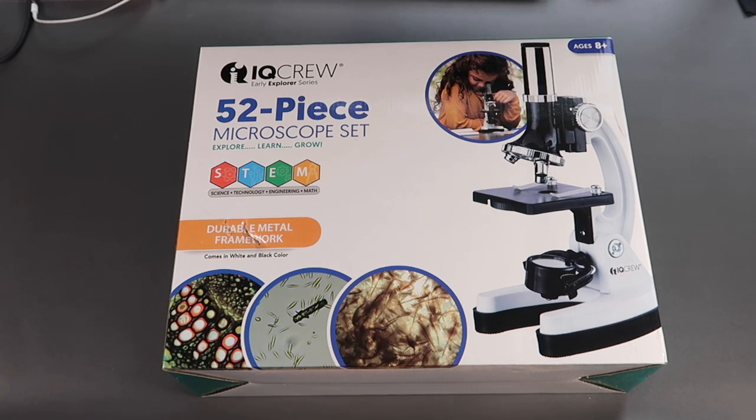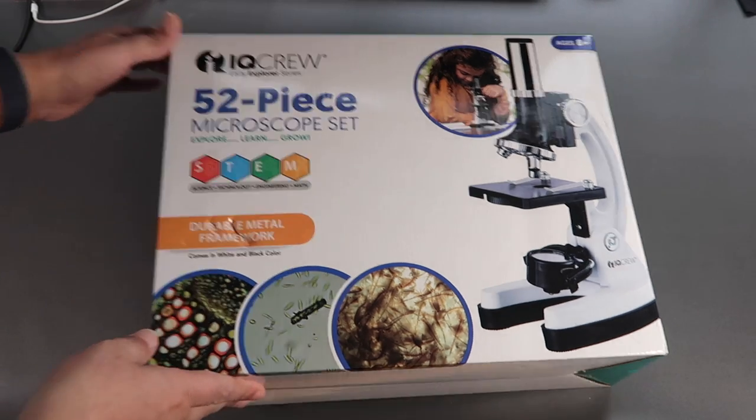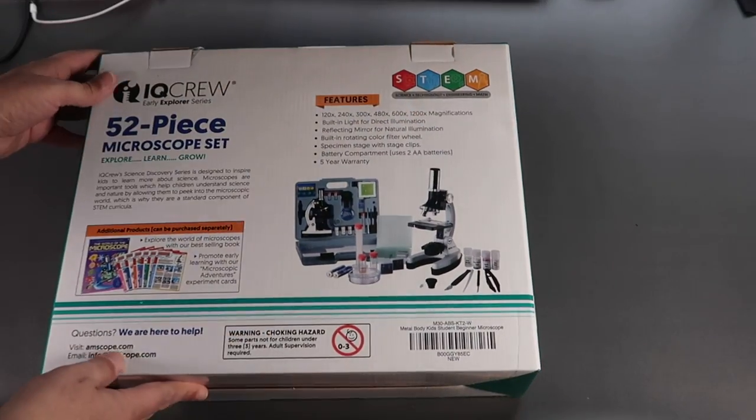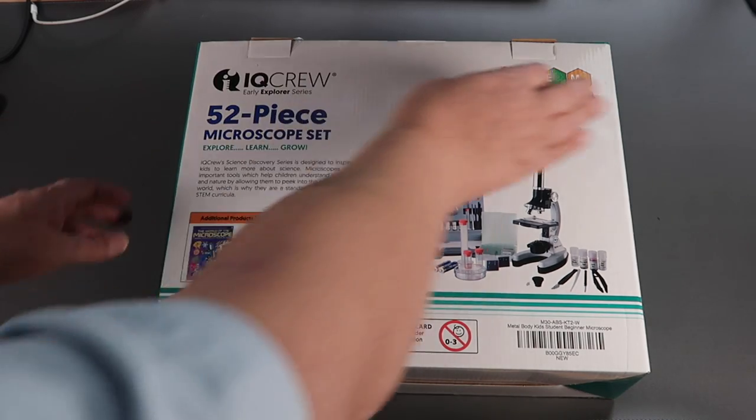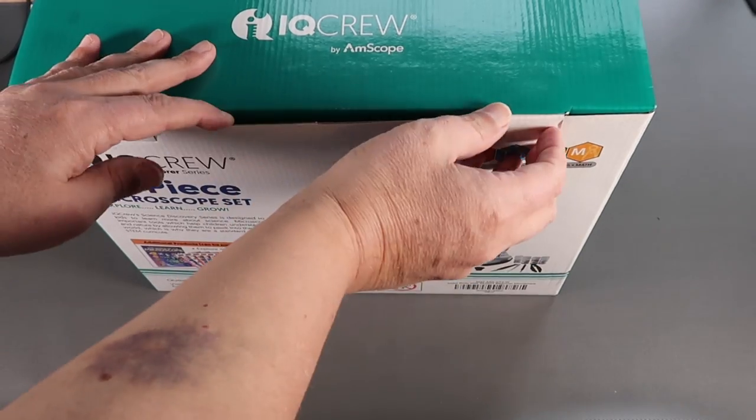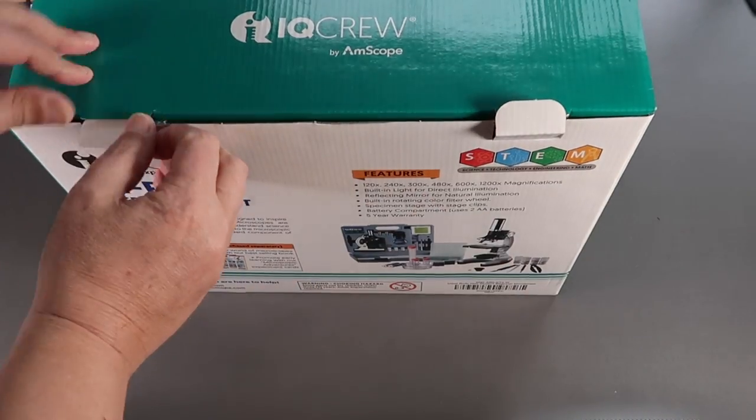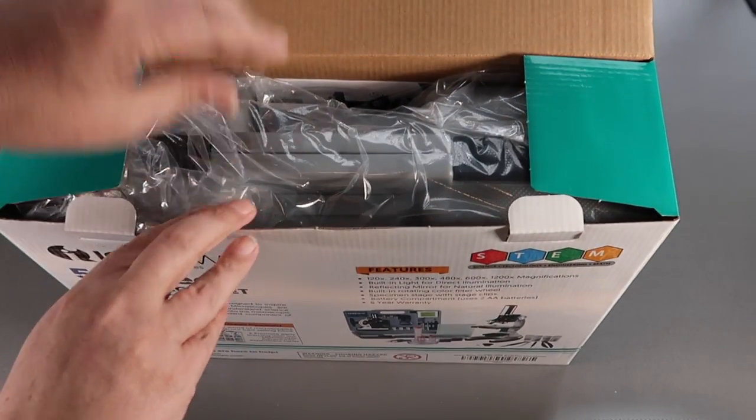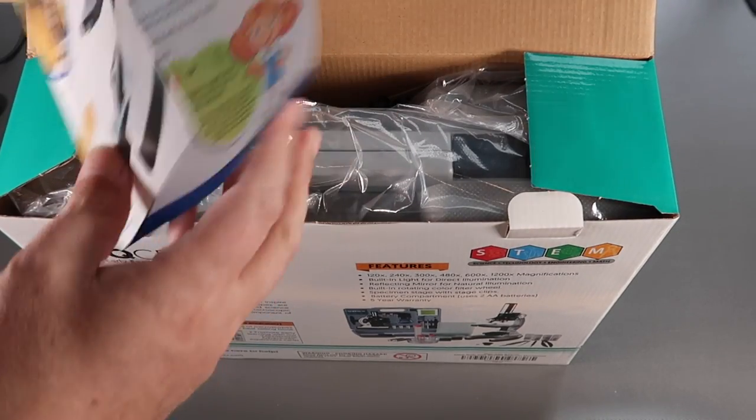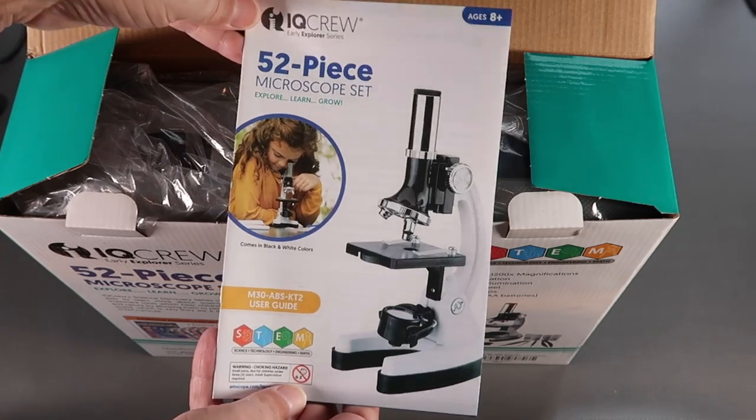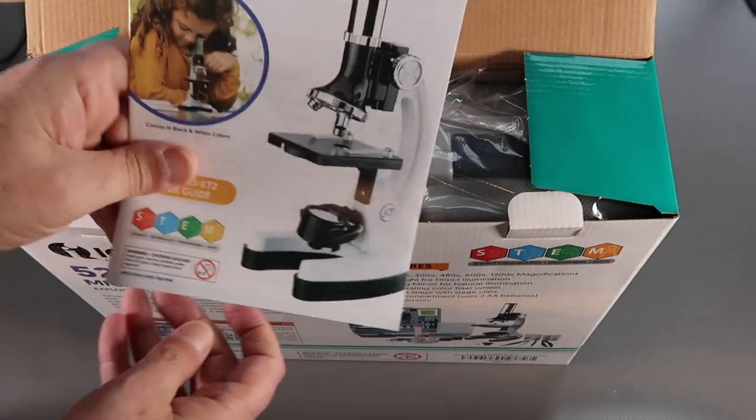In this video we're looking at this 52-piece microscope set. It's from IQ Crew and it's designed for ages 8+. Let's take a look at what's inside. There's an instruction book, which we'll come back to later.